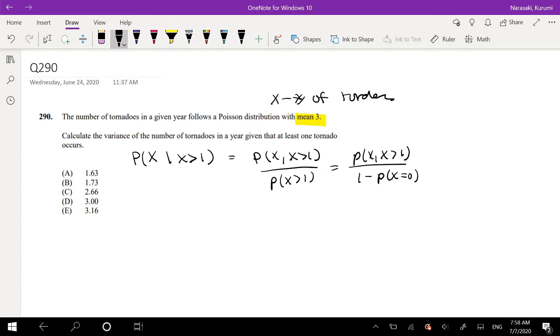Well, to find 1 minus P of X equals 0, that one's pretty simple. Because we know that the Poisson distribution with mean 3, the distribution is going to look like this. So if P of X equals K, then this is equal to E to the negative lambda, lambda to the K, over K factorial. Then this is equal to, if K is equal to 0, that's just equal to E to the negative 3.